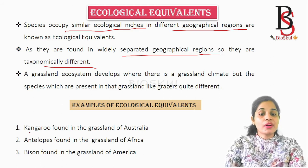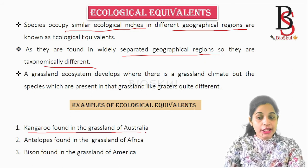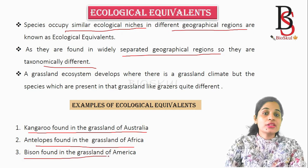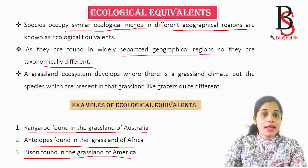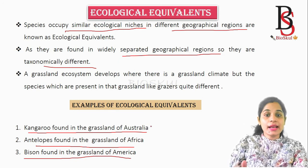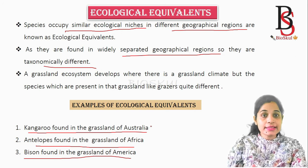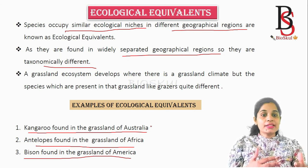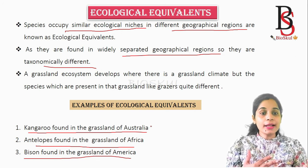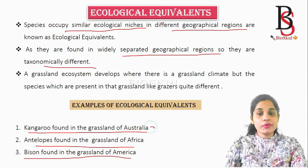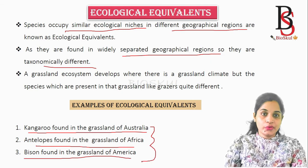Kangaroo is found in the grasslands of Australia, antelopes are found in the grasslands of Africa, and bisons are found in the grasslands of America. These three species are found in the grassland ecosystem — they have similar ecological needs but are present in different geographical regions, and so they form ecological equivalence.